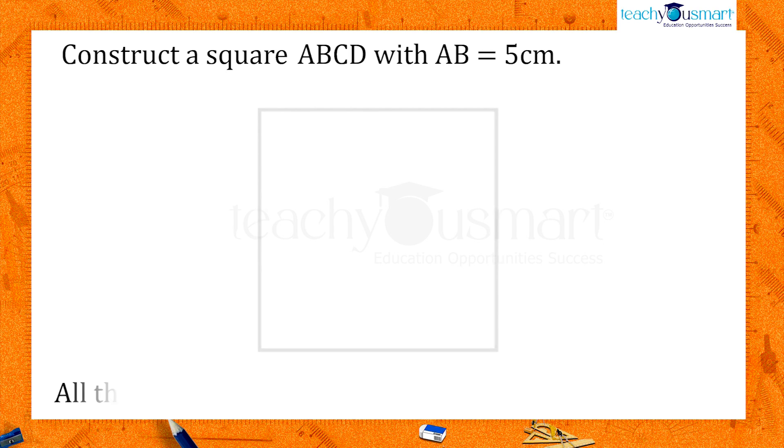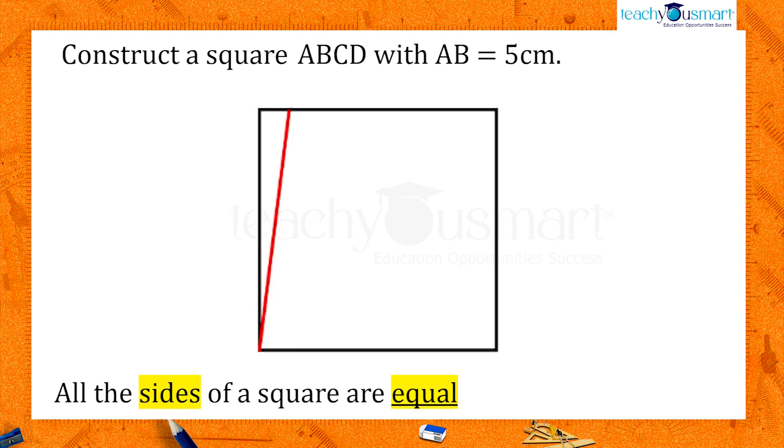We know that all the sides of a square are equal and that each angle is 90 degrees. Then the sides of the square we want to make are five centimeters each.